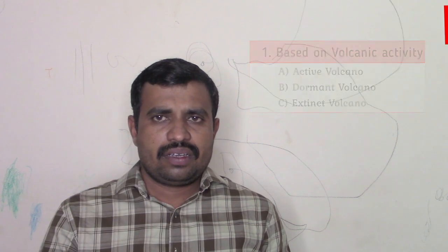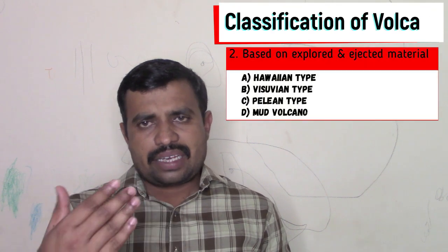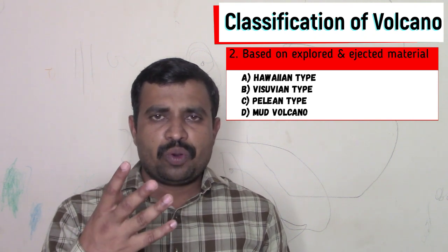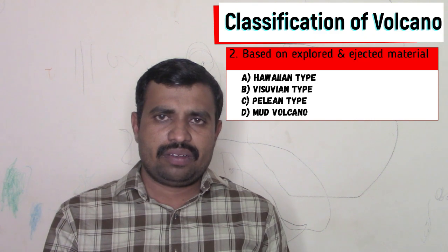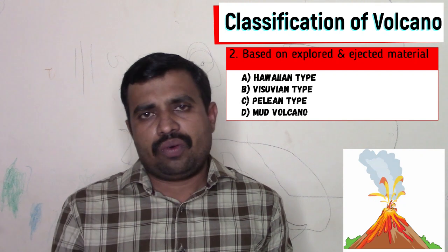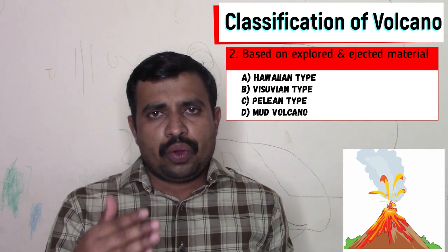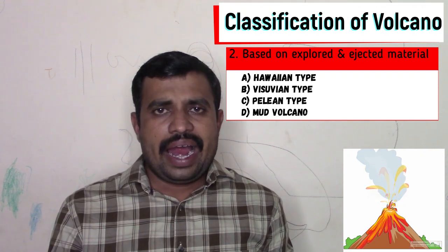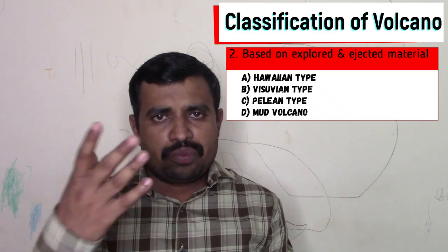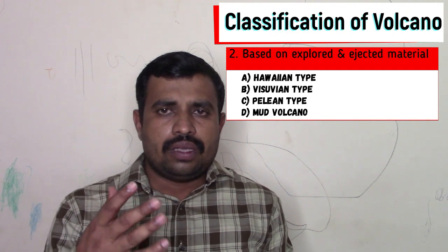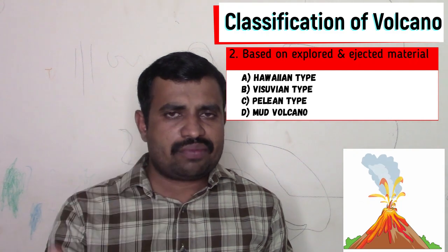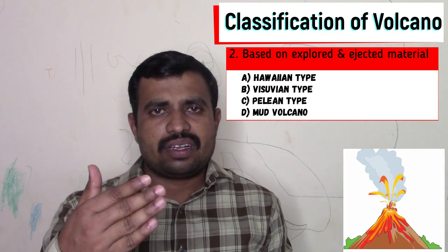Next, we will discuss the second type of classification, which is based on the exploded and ejected material of the volcano. Each and every volcano on the globe shows a different type of lava, and the style of explosion of each volcano is different from the other. On the basis of the material ejected, there are four types of volcanoes. Now we will discuss them one by one.